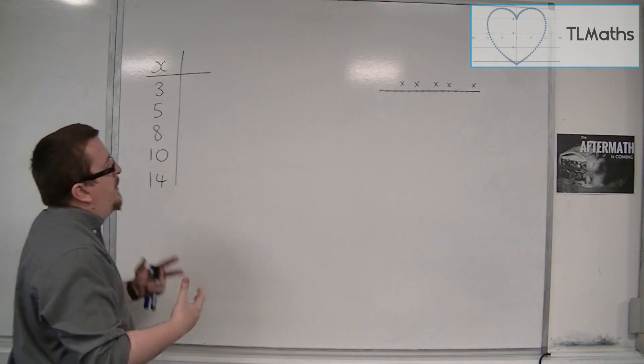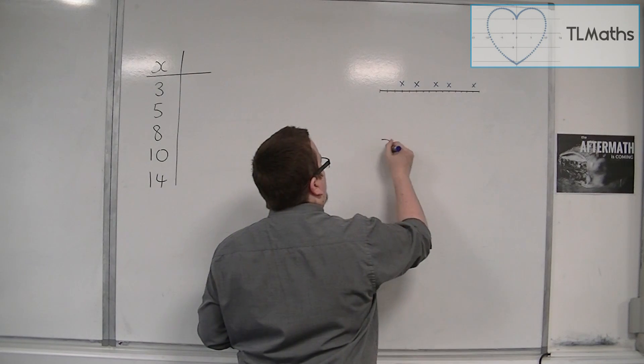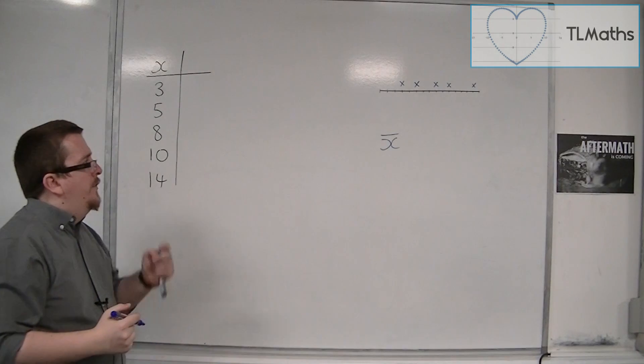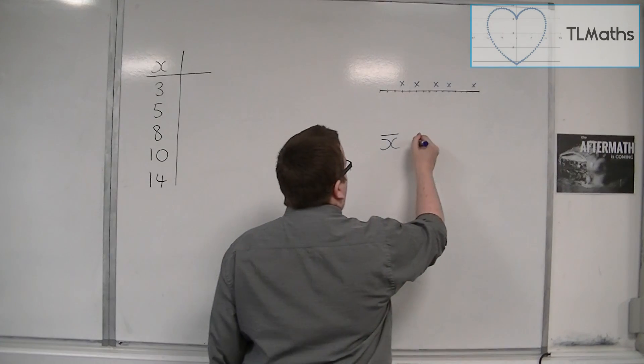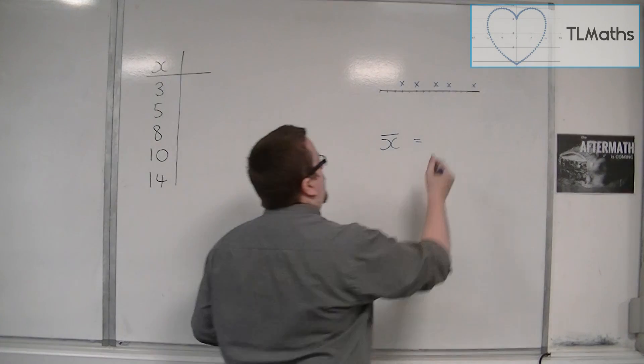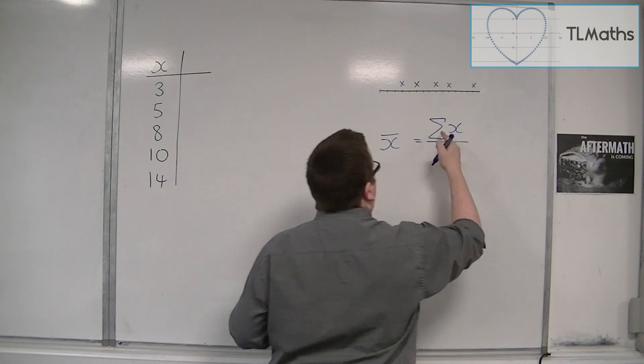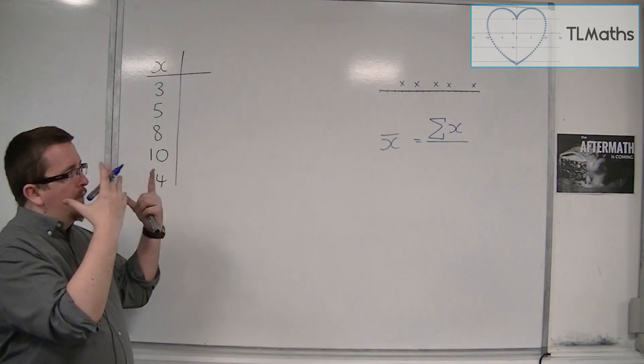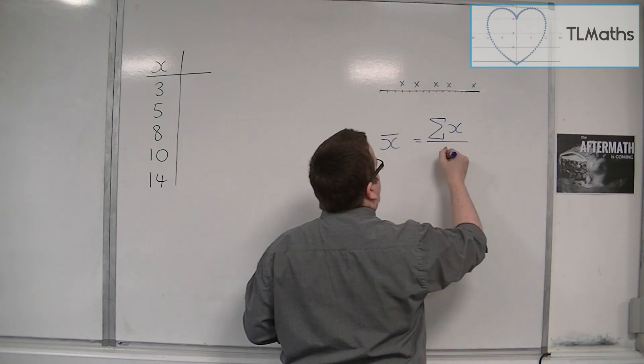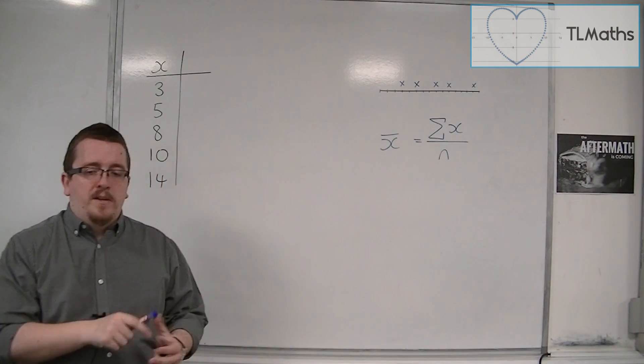So we're going to need to work out the mean. The mean we're going to write as x̄. So x̄ and how we calculate the mean, well, we add them all up and divide by how many there are. So we add up all of the x's. The sigma represents adding them all together. So we add up all of the x's and then divide by how many there are. x̄ is the sum of x divided by n.